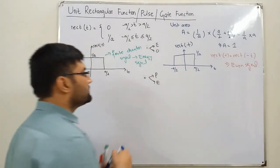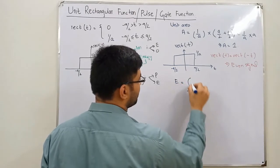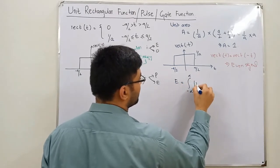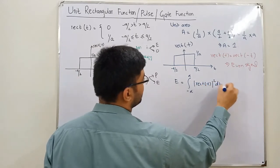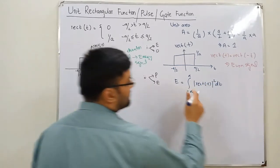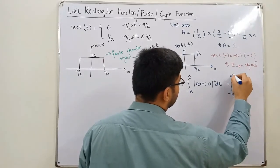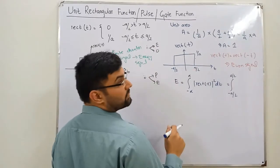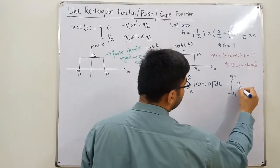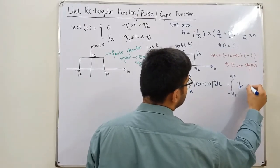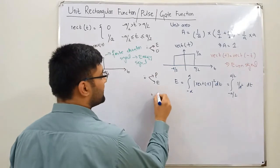Or you can also do it mathematically. If you calculate the energy, it is from negative infinity to positive infinity, the modulus of rect of t whole squared, and you integrate it with respect to t. So which means you don't need to do it in these limits. You can only check from negative a by 2 to positive a by 2. The value is 1 over a. The modulus would be 1 over a, the squared would be 1 over a squared.